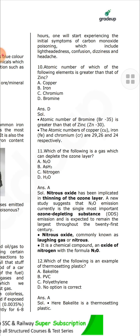Which of the following gases can deplete the ozone layer? N2O — nitrous oxide. Nitrous oxide has been implicated in thinning of the ozone layer. A study suggested that N2O emission is currently the single most important ozone-depleting substance and is expected to remain so through the 21st century. Nitrous oxide, commonly known as laughing gas, is a chemical compound — an oxide of nitrogen with formula N2O.